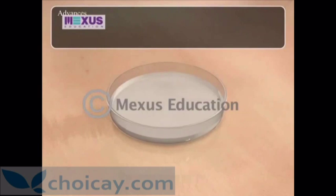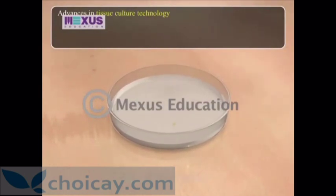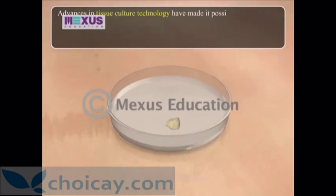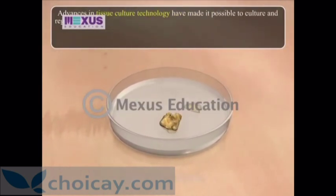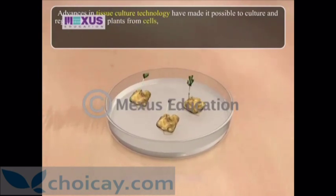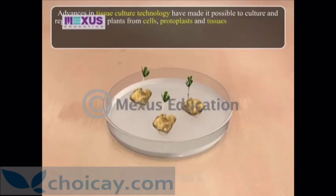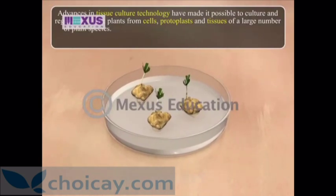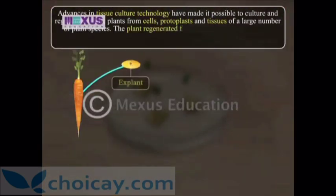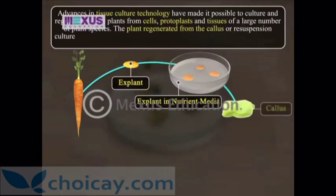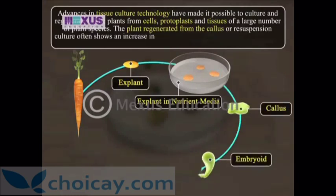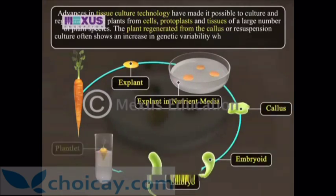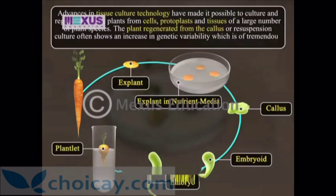Advances in tissue culture technology have made it possible to culture and regenerate whole plants from cells, protoplasts and tissues of a large number of plant species. The plant regenerated from callus or suspension culture often shows an increase in genetic variability, which is of tremendous importance in breeding for crop improvement.